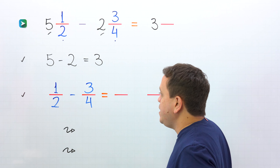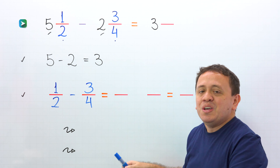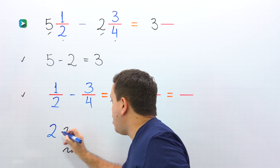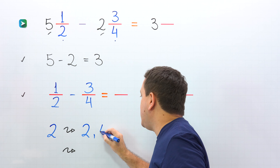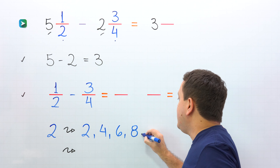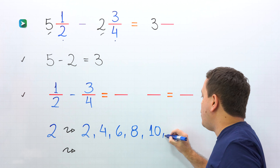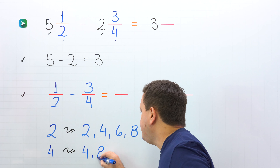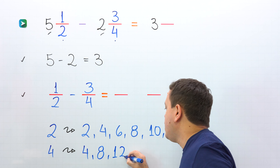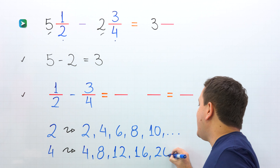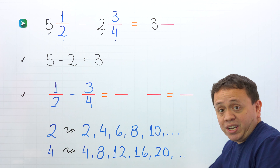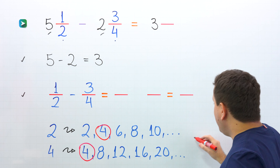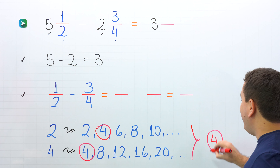These fractions have different denominators: 2 over here, 4 over here. To find the difference, we need the least common denominator. The first multiples of 2 are 2, 4, 6, 8, 10, and so on. The first multiples of 4 are 4, 8, 12, 16, 20, and so on. As you can see, the smallest number on both lists is 4. Then 4 is the winner — 4 is the least common denominator.